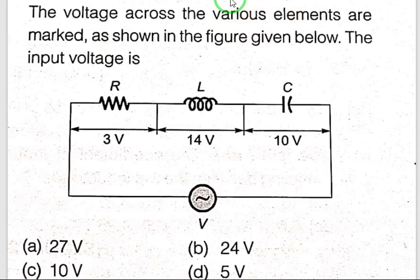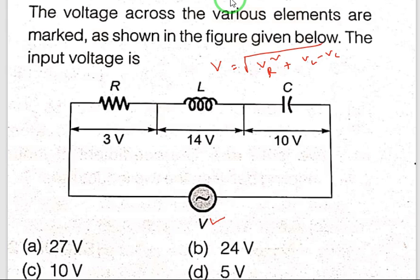See here, the voltage across the various elements are marked as shown in the figure given below. The input voltage is being asked. If we directly use the formula, V equals root over VR squared plus VL minus VC whole square. This is method one.